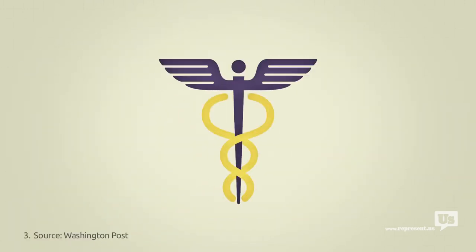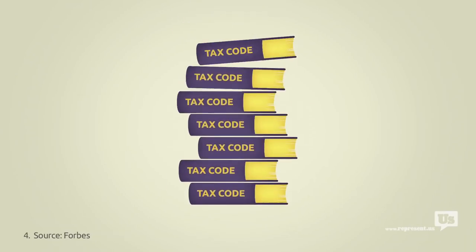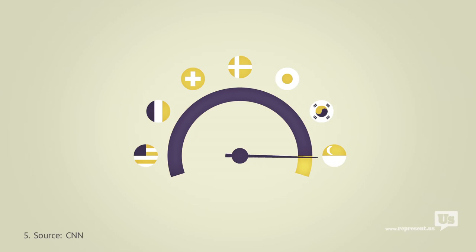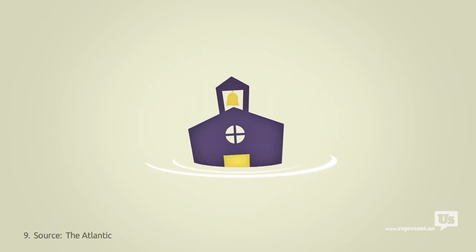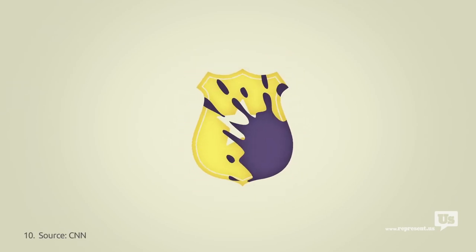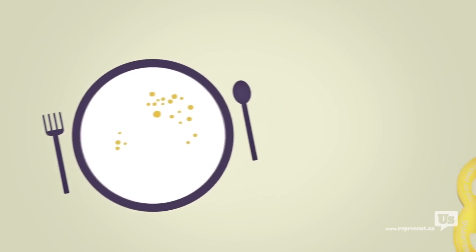We pay for it, with the most expensive healthcare in the world. We pay for it with a tax code that's a complete mess. We pay for it with internet that's slower and more expensive, with wasteful spending, a floundering education system, a catastrophic drug war, and one in five American children born into poverty. Almost every major issue we face as a nation can be traced back to this graph.